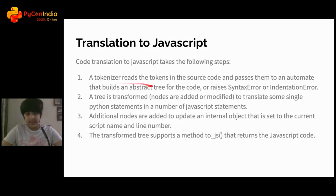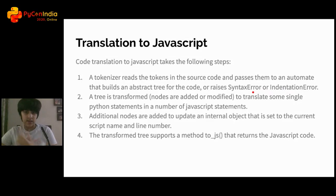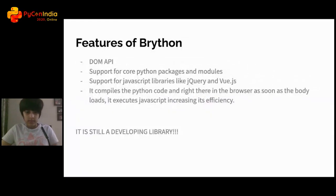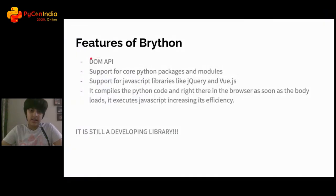In the translation to JavaScript step: the tokenizer reads tokens, passes them to the abstract syntax tree, and based on the code it raises SyntaxError or IndentationError — yes, you do get those errors. The tree is modified based on line number and script name, additional nodes are added, and then the transformed tree uses a to_js method which returns the final JavaScript code.